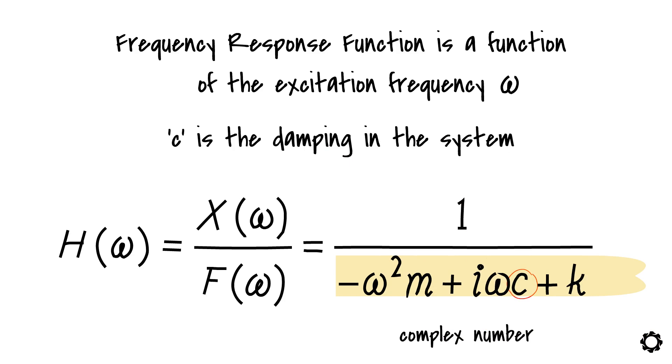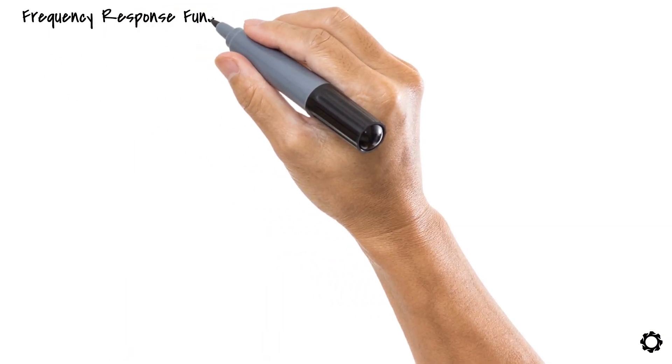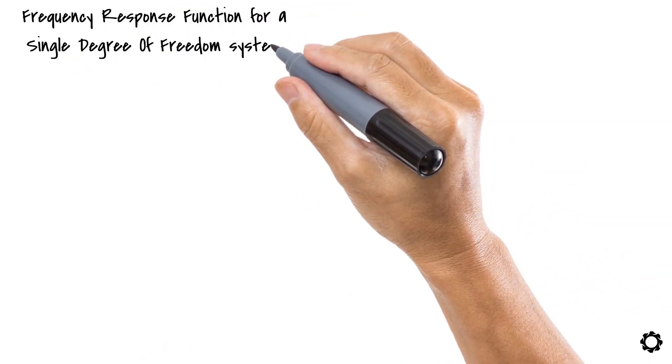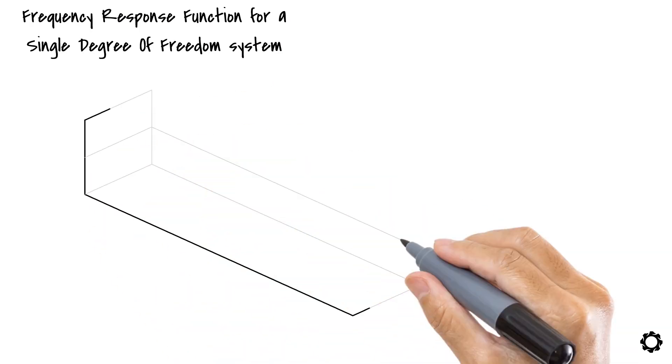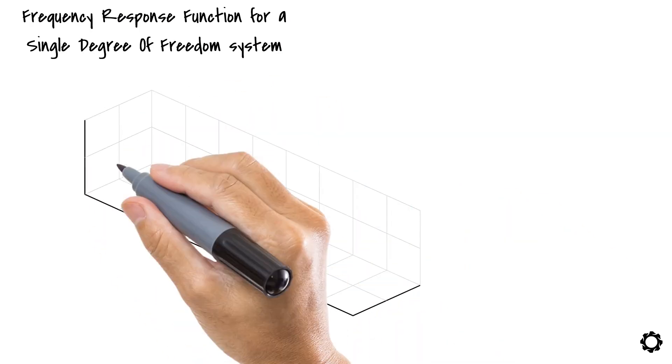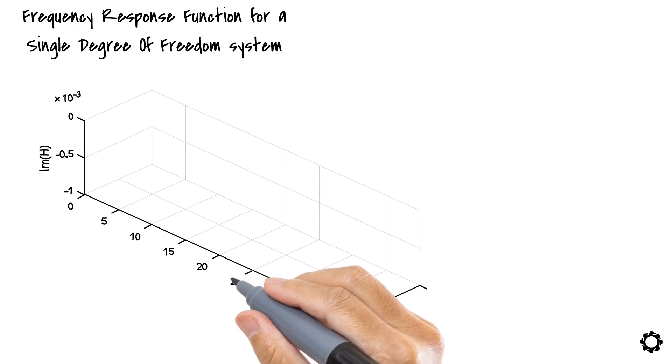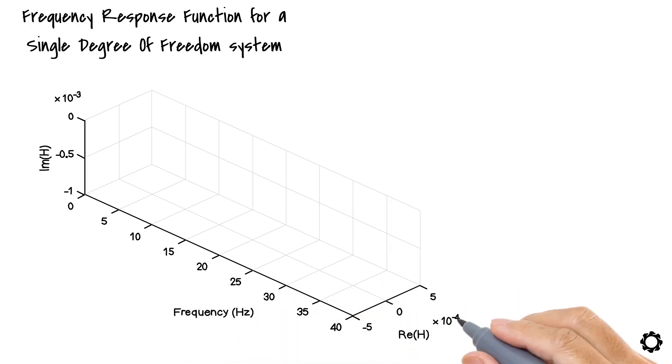Let's dive back into the experimental results. The frequency response function for a single degree of freedom system, the one we got from the signal analyzer above, will look something like the black curve below.